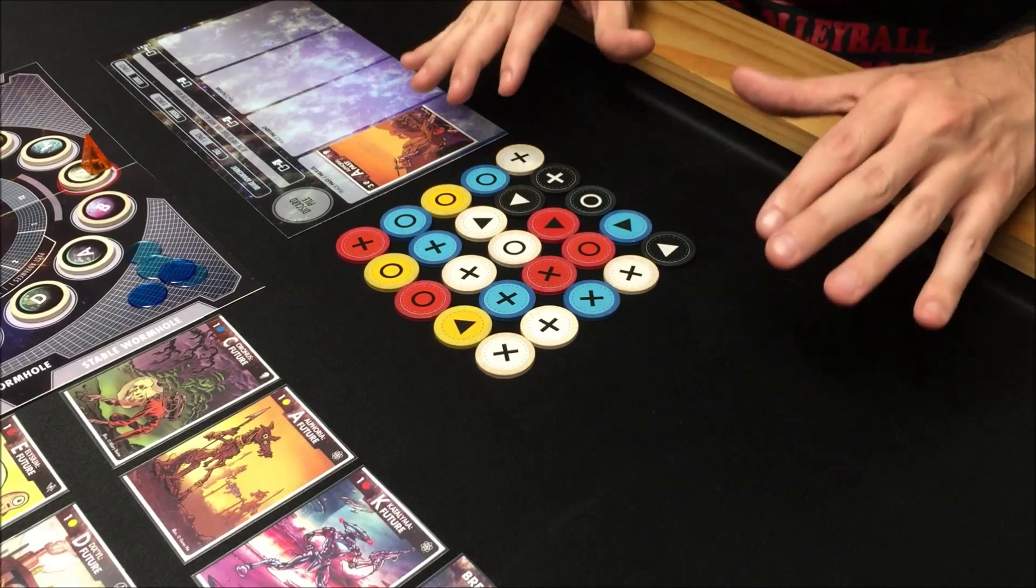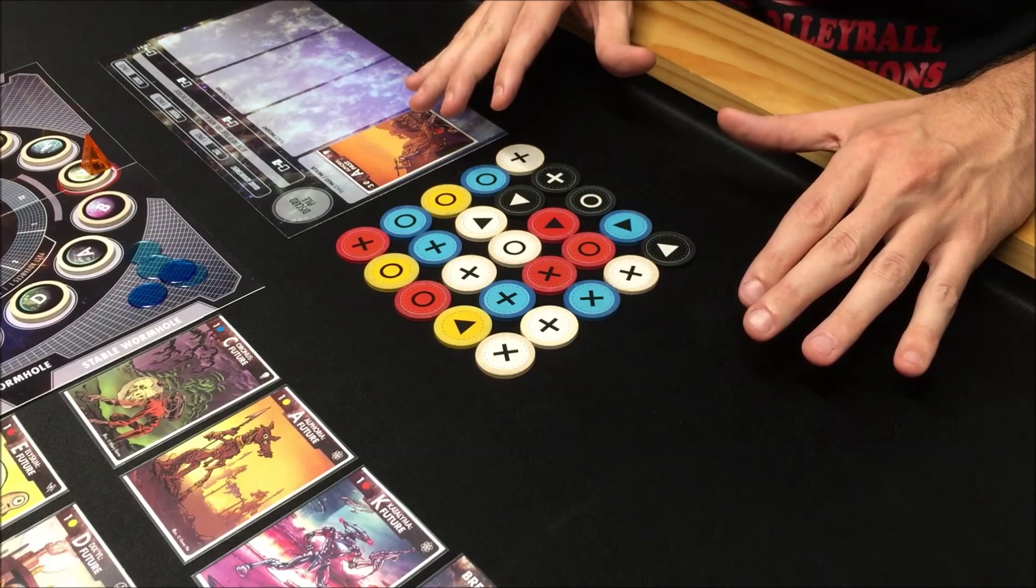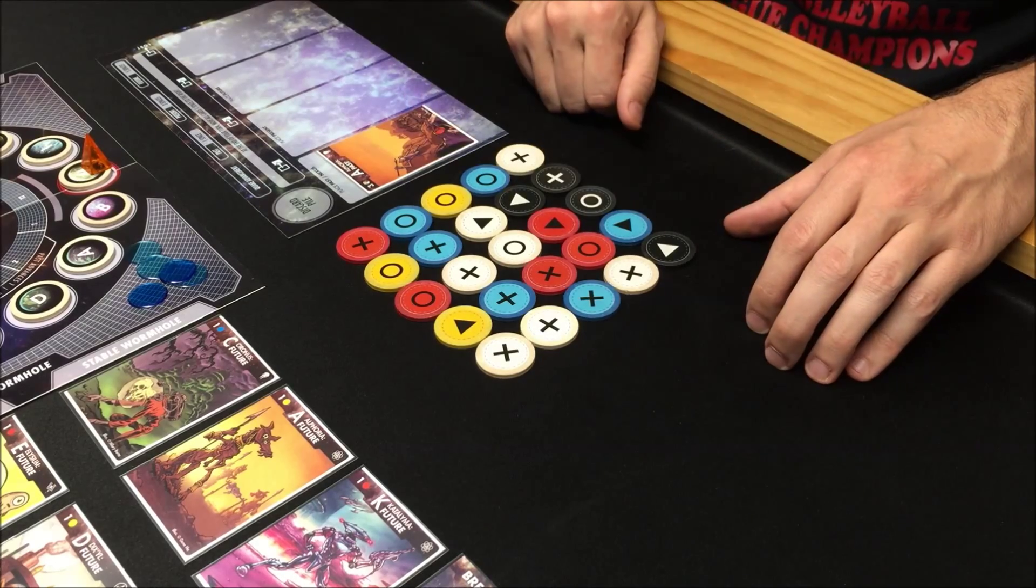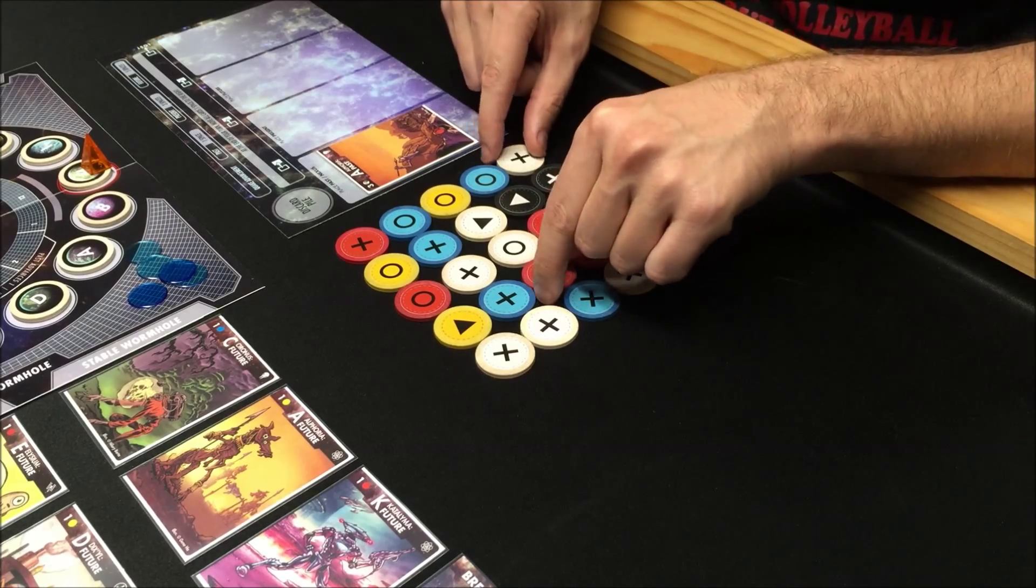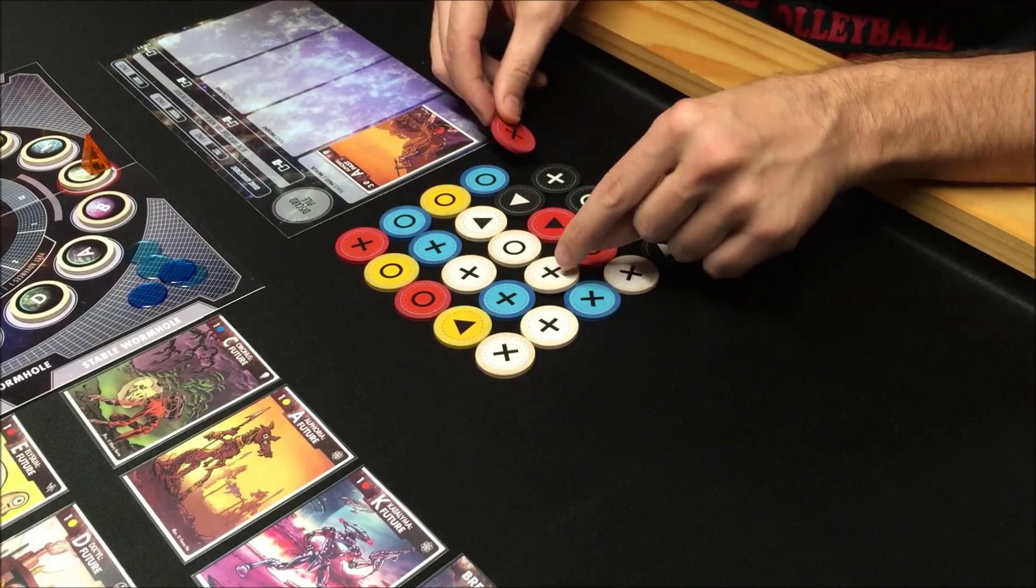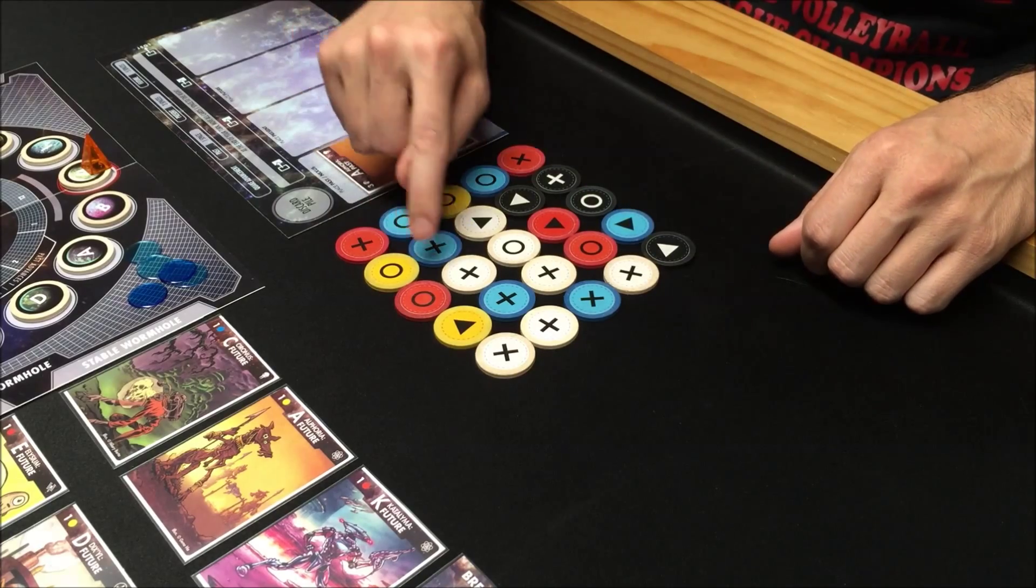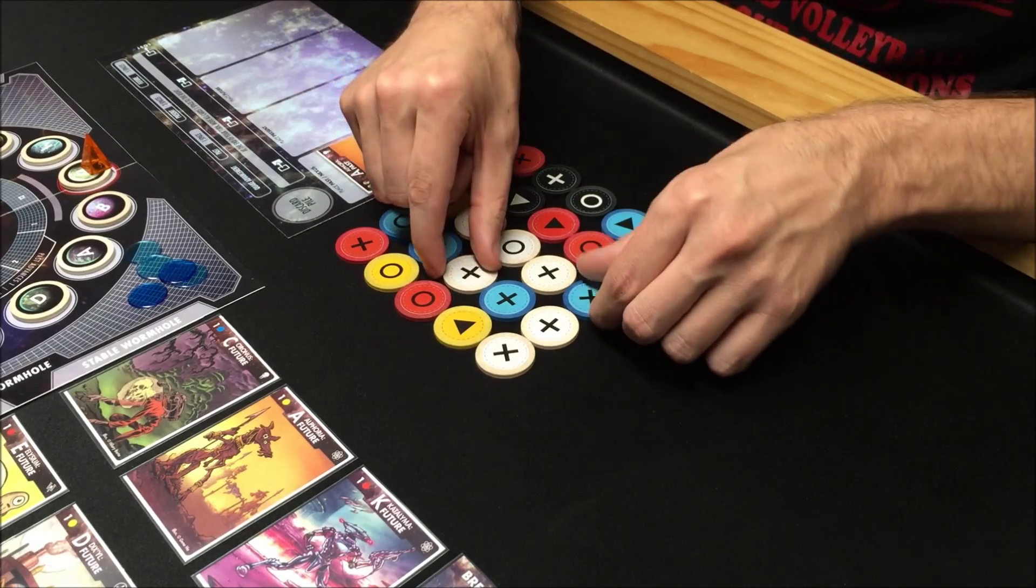As you can see, you can make an easy match, but it's about looking a little bit deeper to see how you can make more efficient matches. For one of my actions, I can swap this X and this X. If you see here, I have a white X and a blue X.